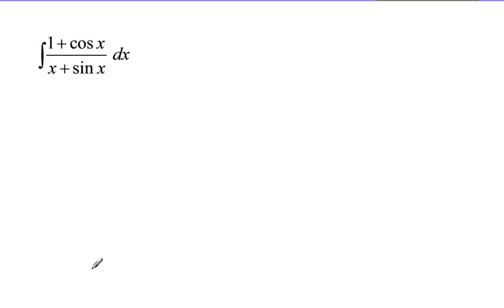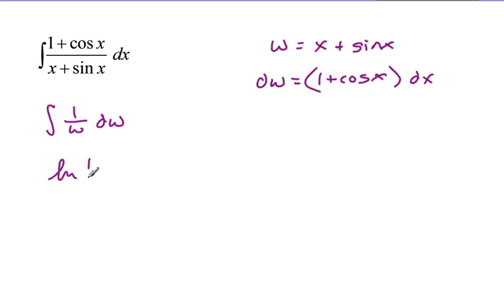One last problem. Again, we have to choose our w. If we start at the top, we see our derivative is negative sine x, but we have no idea what to do with this x. And our dw should never go in the denominator. If I take the derivative of x plus sine x, I get 1 plus cosine x. How convenient. So we're going to let w be x plus sine x. dw is 1 plus cosine x dx. How lovely, because it's sitting right there. So my integral becomes 1 over w dw. Antiderivative: natural log w plus c. Put the original back in: x plus sine x plus c.